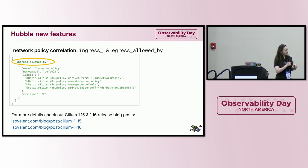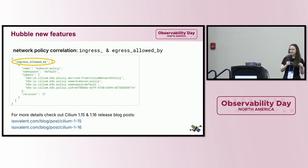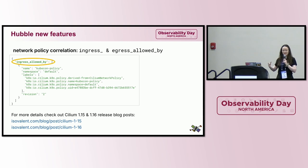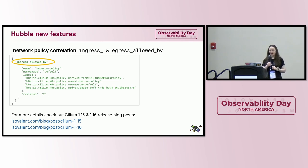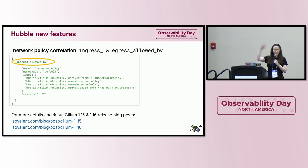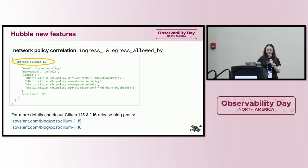Last but not least, network policy correlation. One of the main use cases for Hubble is troubleshooting network policies in a Kubernetes cluster. What we're often asked is: what policy dropped a packet? It's not an easy question to answer in complex clusters with many policies, because many policies come together and their product affects what packets are allowed or dropped. Hubble flows now include ingress-allowed-by and egress-allowed-by fields that tell you which network policies are responsible for a particular network flow. For more details about new Hubble features, check out the Cilium 1.15 and 1.16 release blog posts.